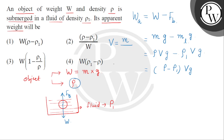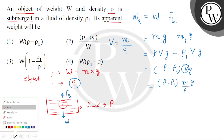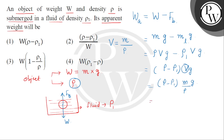तो यहाँ से जब हम V को substitute कर देंगे, we get rho minus rho 1, M divided by rho, G. अब इस rho को जो कि denominator में है हम दोनों terms में distribute कर देंगे. So first term will become 1, minus second term will be rho 1 divided by rho.